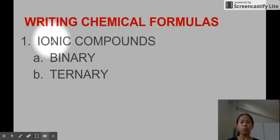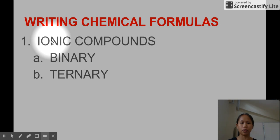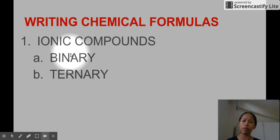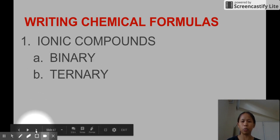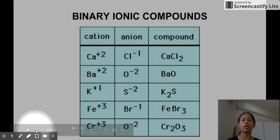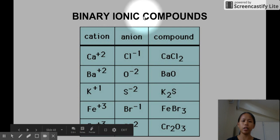When we talk about ionic compounds, these are compounds that are formed from two ions. We have cations, which are formed from the losing of electrons, and the anion, which is formed from the gaining of those lost electrons from the metals. We will divide this into two: binary and ternary ionic compounds, so that you won't get confused.